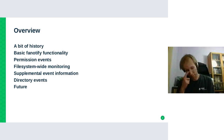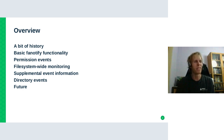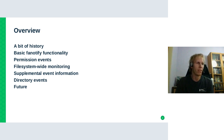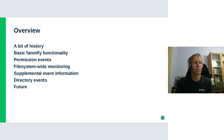I happen to be the upstream maintainer of this subsystem in the Linux kernel. So if I'm speaking in too much detail, please bear with me or speak up and I'll try to explain. I'll first speak about a bit of history of file system event notification frameworks in the Linux kernel, which is an exercise in API design and how it should not be done. Then I will speak about basic fanotify functionality, extended functionality like permission events, new features like file system-wide event monitoring, supplemental event information, directory events, and some possible future developments.